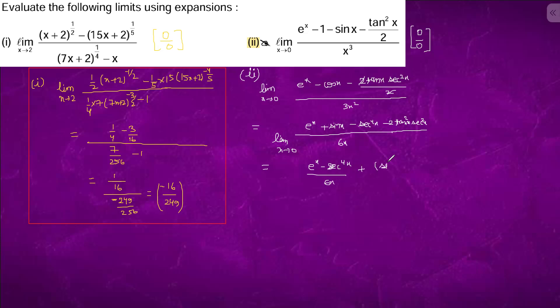Limit x tending to 0. We will differentiate this one, we will get e to the power x minus 4 sec cube x. Sec x tan x times 6. This 6 will cancel. When we put 0 it will come out, this will become 0.